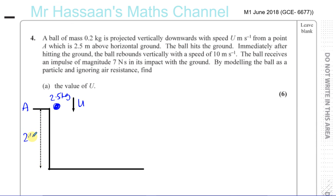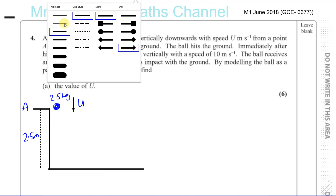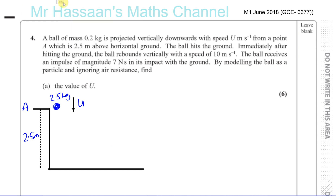That's 2.5 meters. The ball hits the ground. Immediately after hitting the ground, the ball rebounds vertically with a speed of 10 meters per second. So the ball hits the ground — before it hits the ground it's going at a certain speed which we don't know, but it leaves the ground at 10 meters per second. I'll call the speed it hits the ground x, since it's not going to be the same as u.